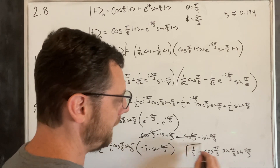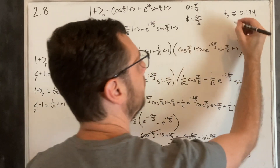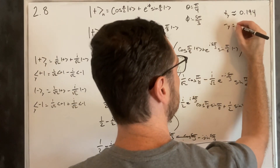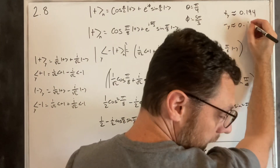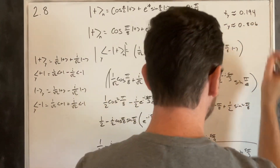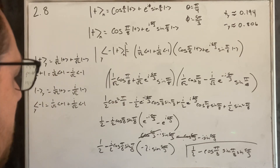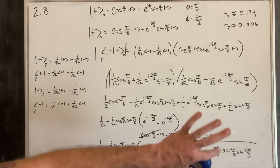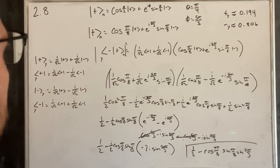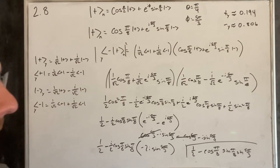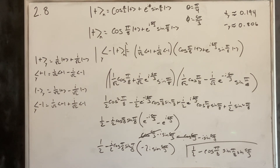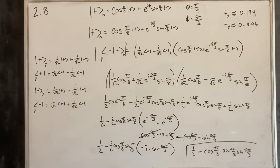Putting that into the calculator, minus in the y-direction should be around 0.806. With the trig functions it wasn't as easy as just our basic directions, but we didn't need any trig identities this time, so it's easier than the last question.